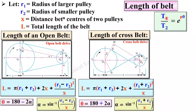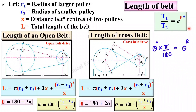A very important formula: T1 / T2 = e^(μθ), where T1 is the tight side tension and T2 is the slack side tension — units for both tensions are always in Newton. Mu (μ) is the coefficient of friction, which is unitless. Theta (θ) is the contact angle or lap angle, which must always be in radians for this formula. If the angle is in degrees, multiply by π/180 to convert to radians.